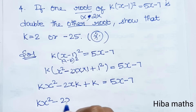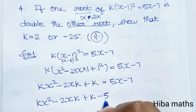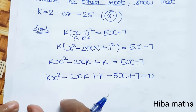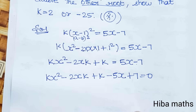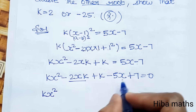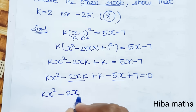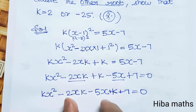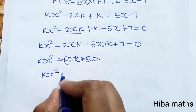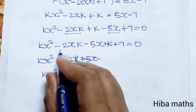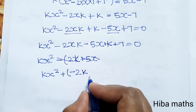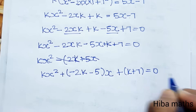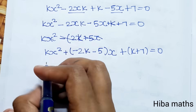Rearranging all terms to one side: kx² - 2kx + k - 5x + 7 = 0. Grouping the x terms gives us kx² + (-2k - 5)x + (k + 7) = 0. Now we have a standard quadratic with two roots.